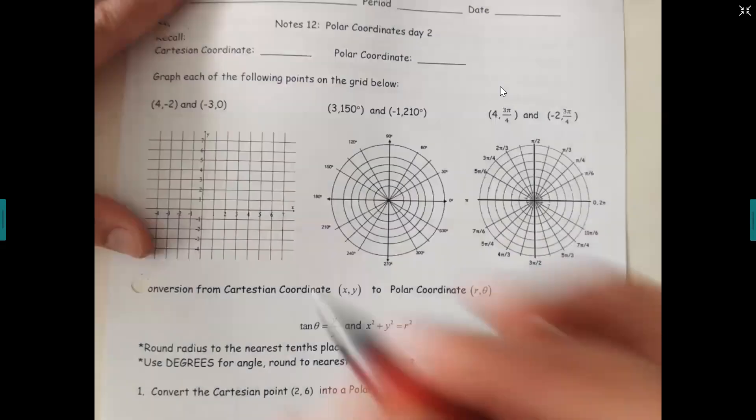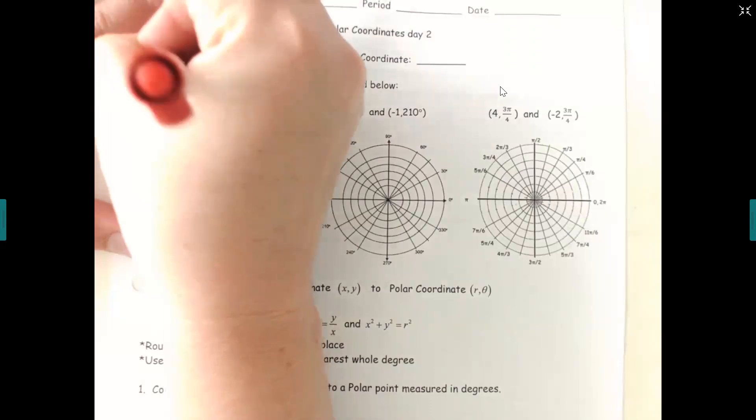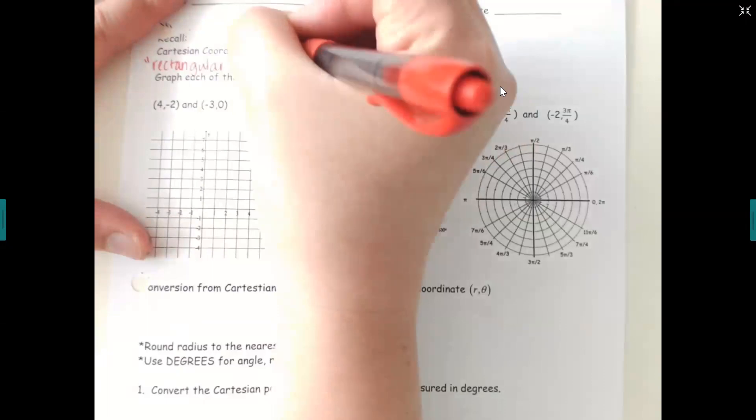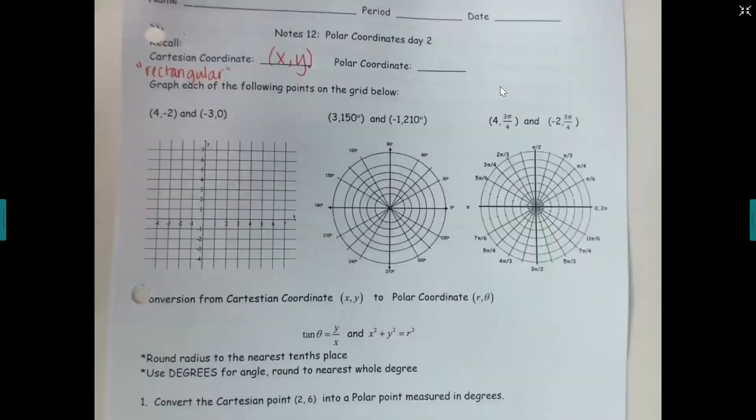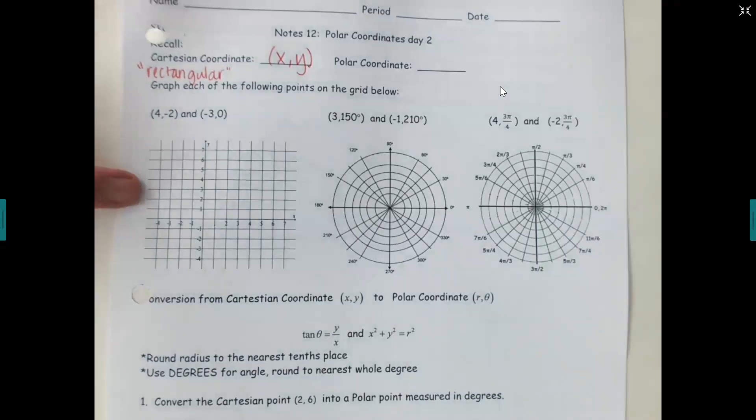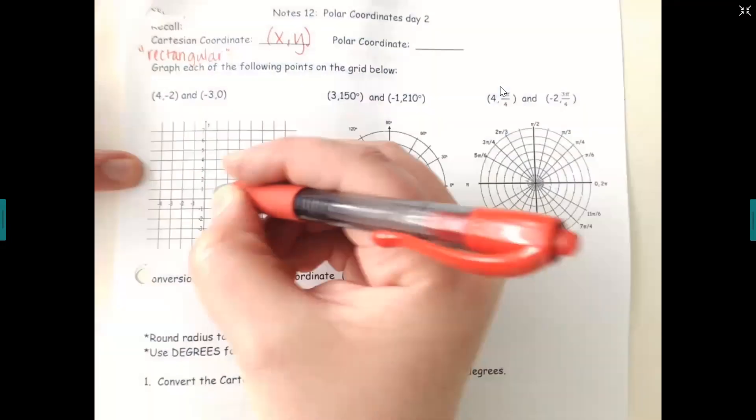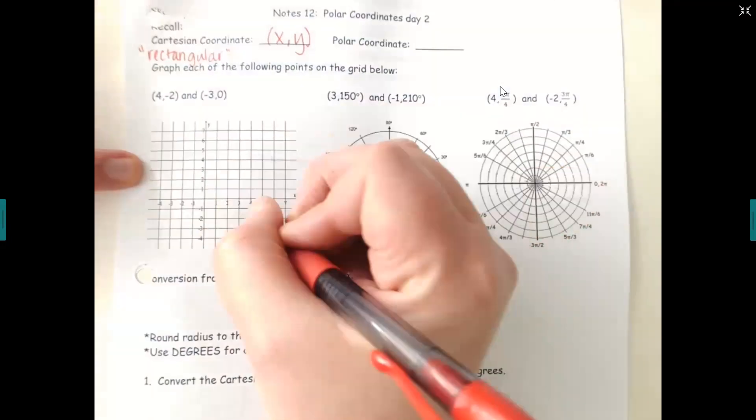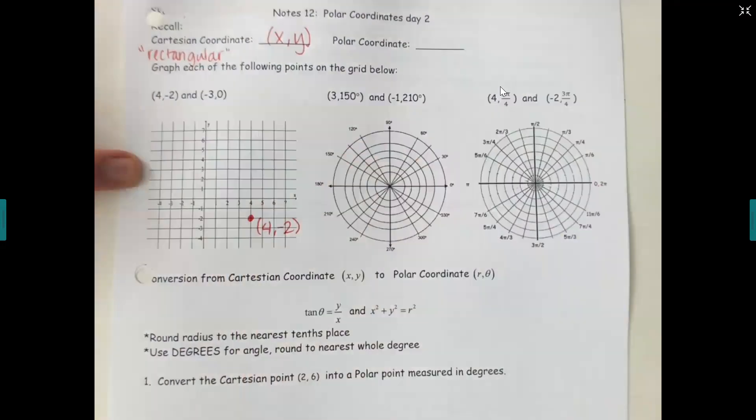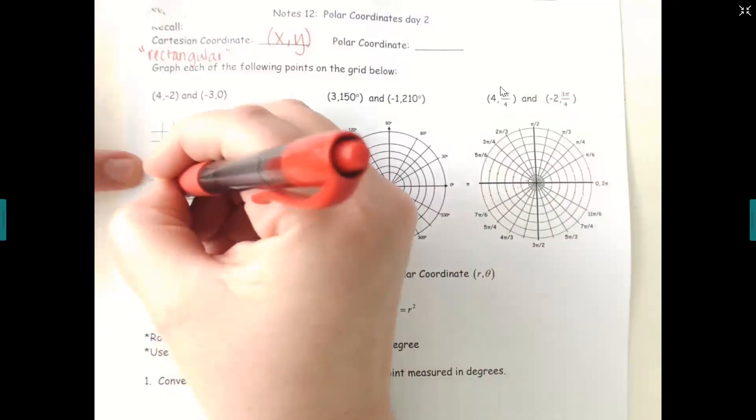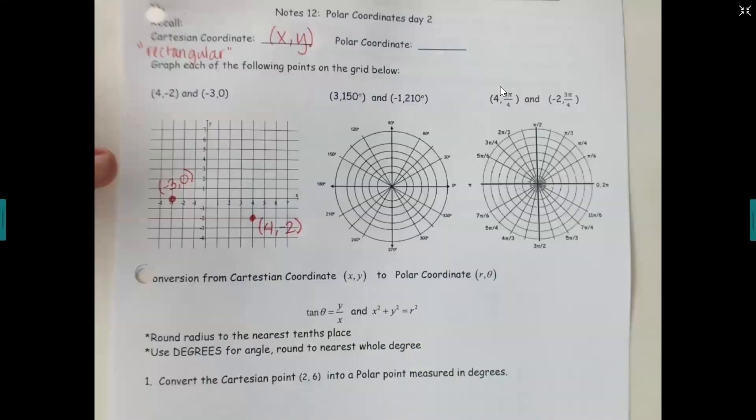A Cartesian coordinate is the same as a rectangular coordinate. Remember that rectangular coordinates are x comma y, just like your very first grid here. So 4 negative 2, can you place that on your grid? 4 would be the x, negative 2 would be the y. Your point would end up right there. One more point: negative 3, 0. Go to the left 3, up and down 0. That would end up right here. That is the type of graphing that you've been doing since eighth grade.